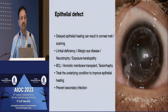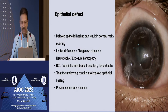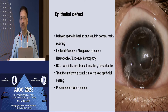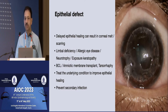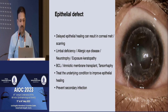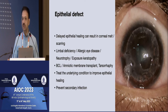Some of the common emergencies you come across: one is post-operatively, especially in the early post-op period, you can have a non-healing or a persistent epithelial defect. Identification and management is important because if not managed, it can result in stromal melt and perforation, and also predisposes to secondary infection.